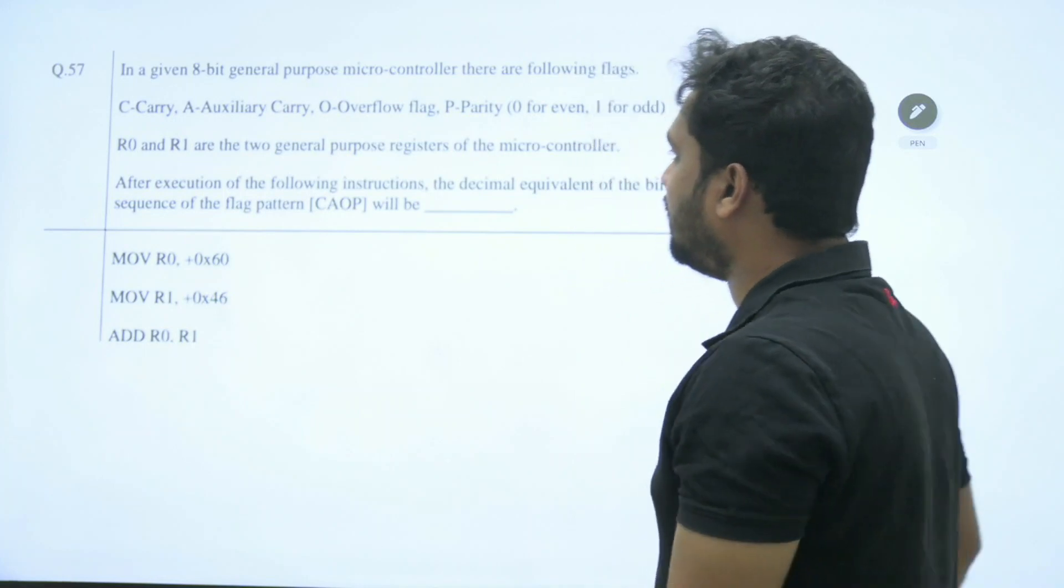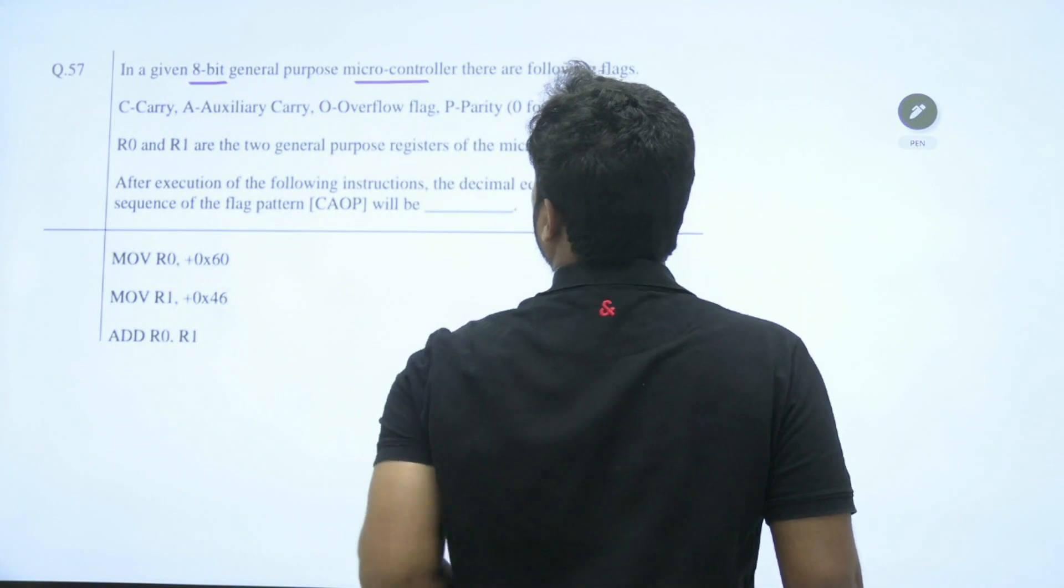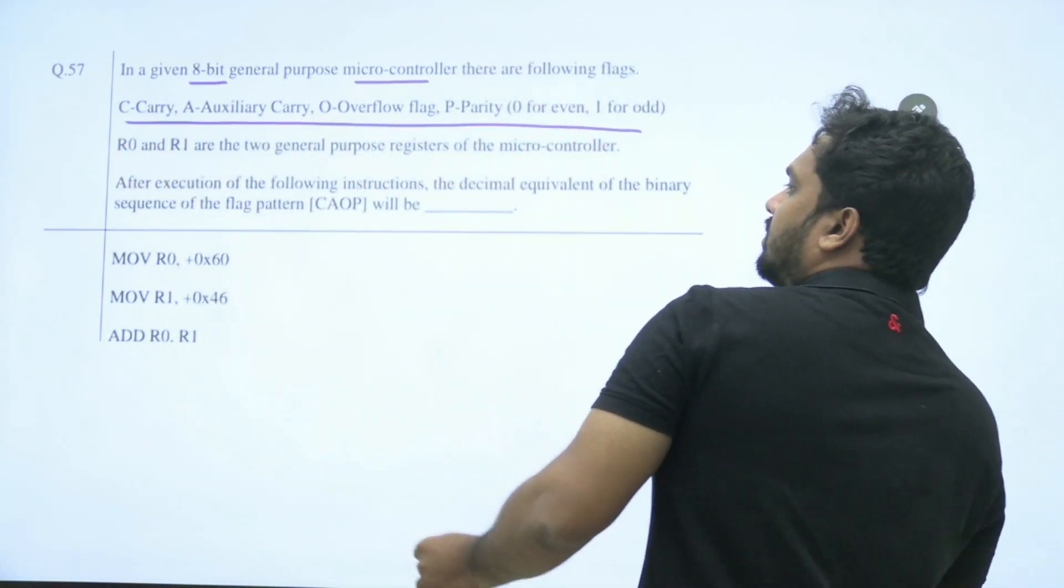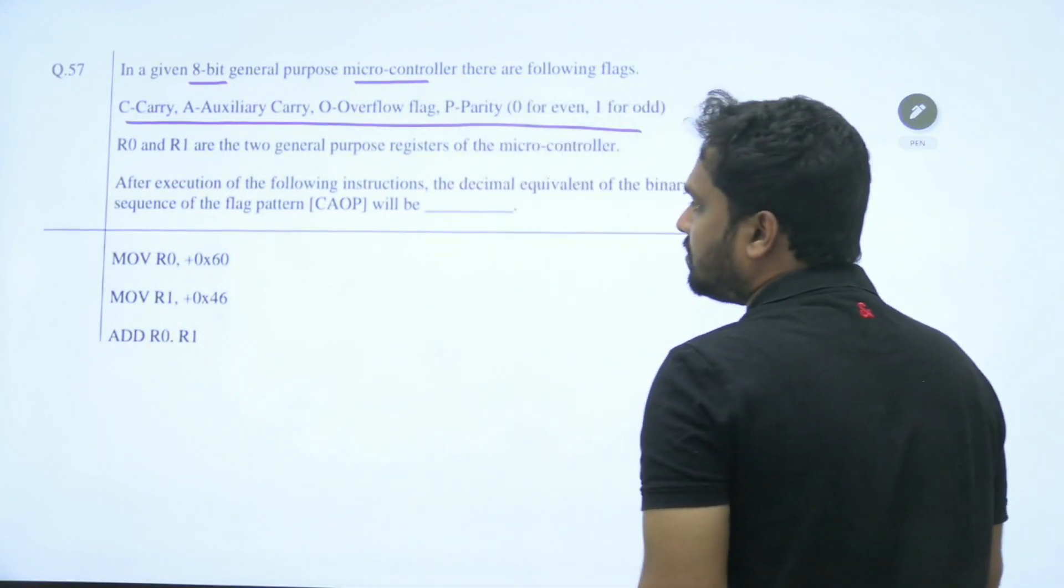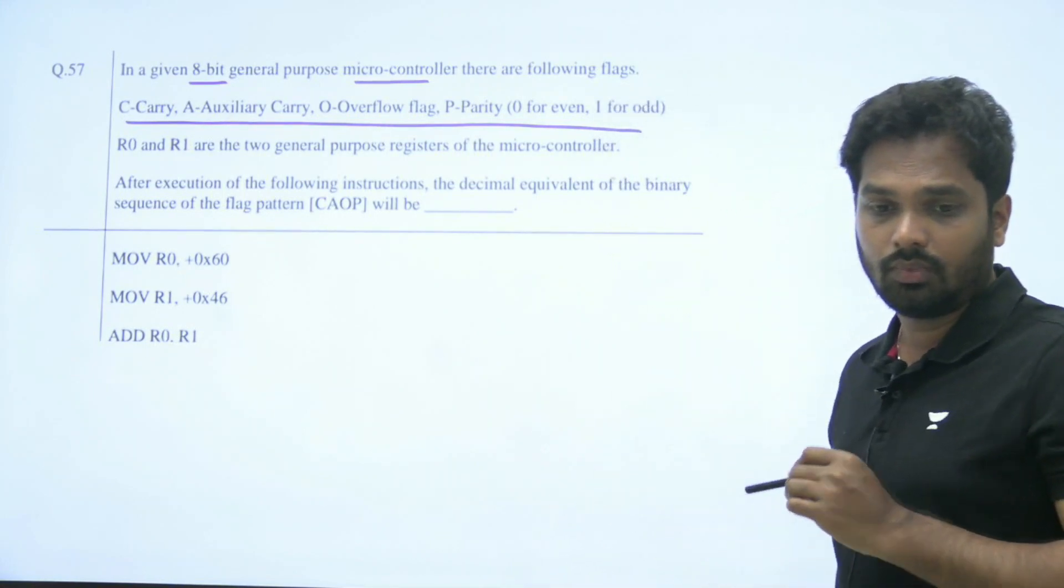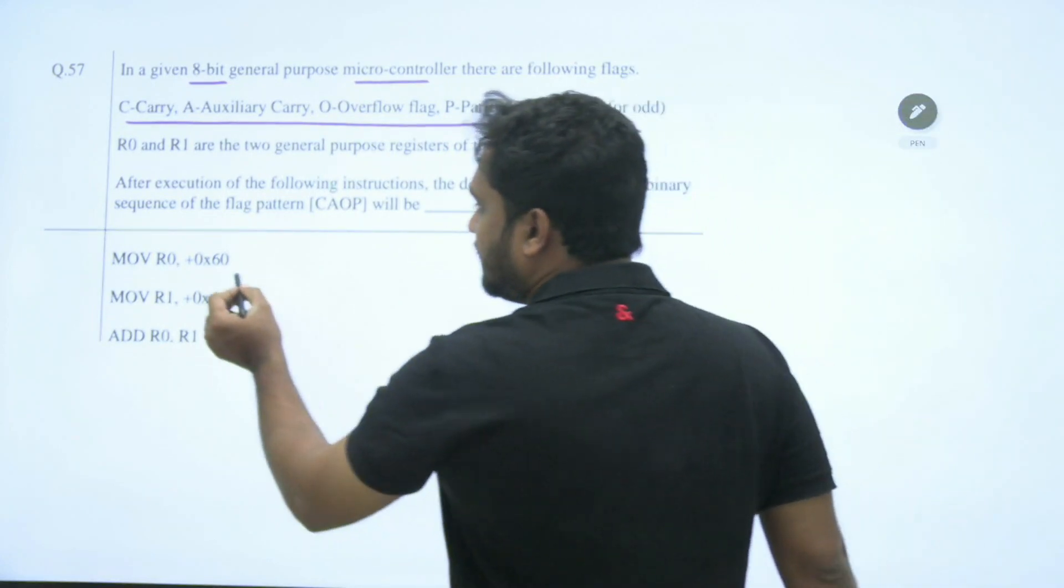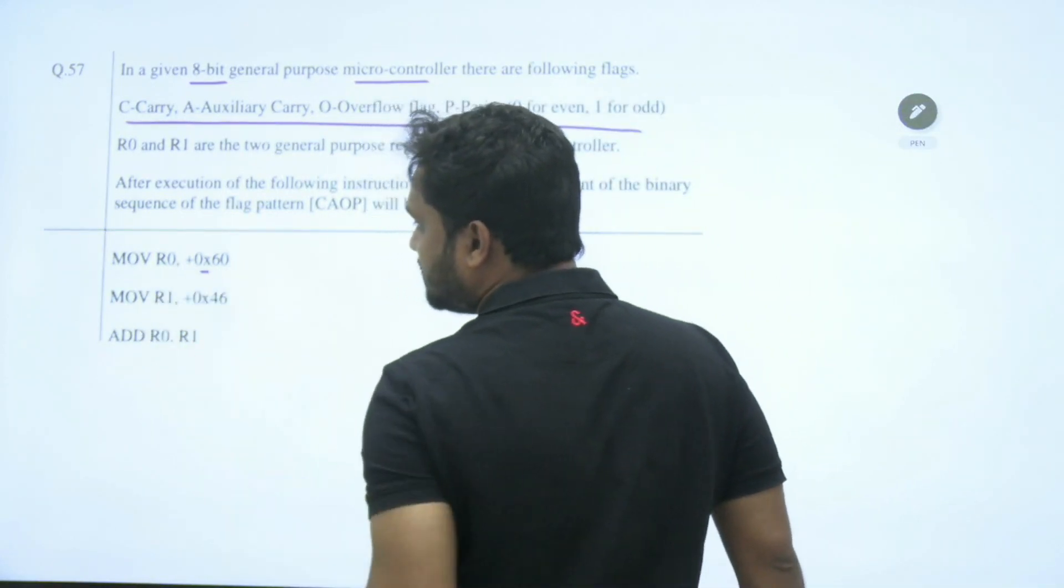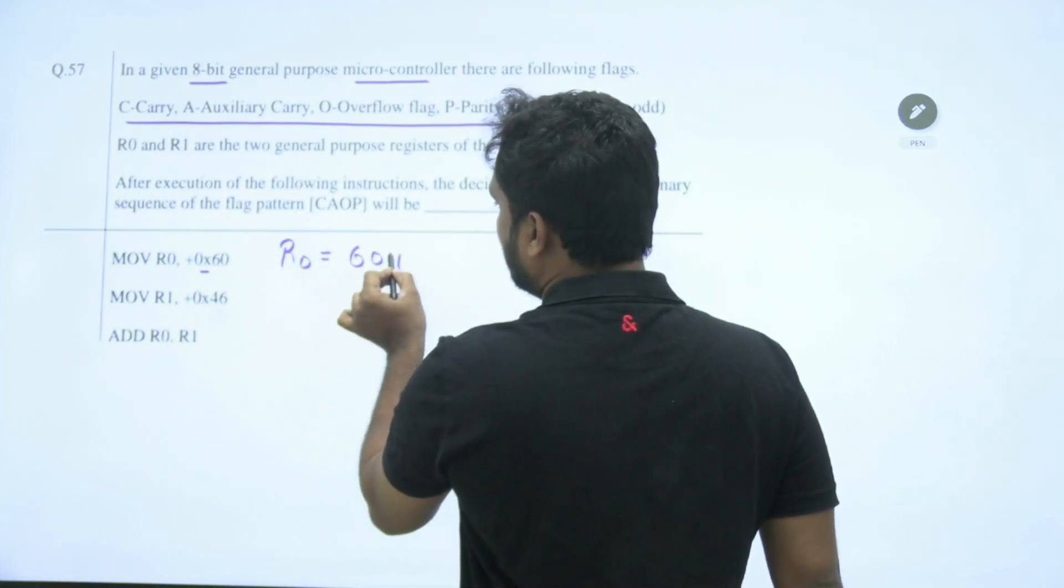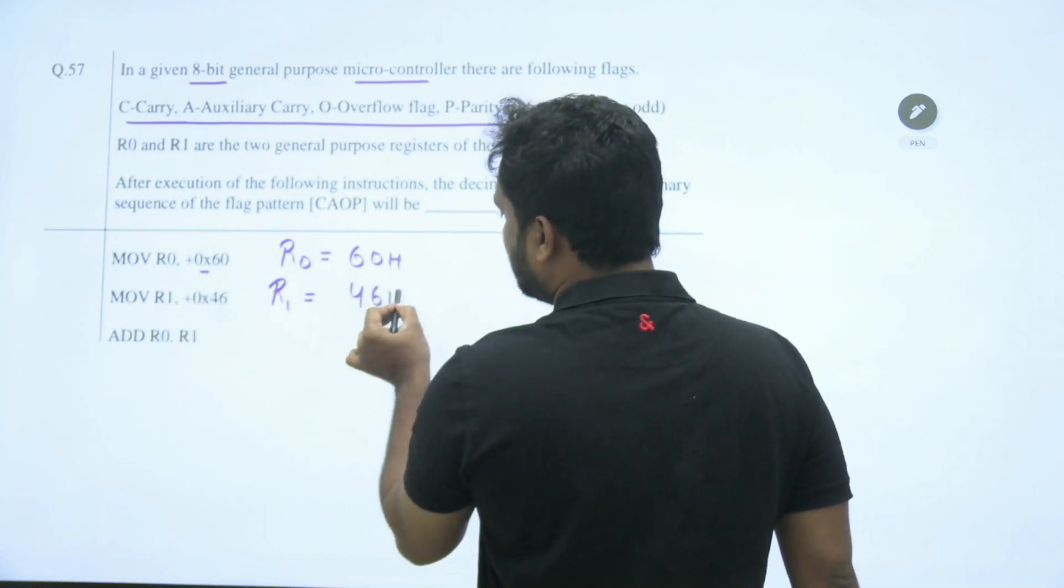So you have an 8-bit general purpose microcontroller with following flags: carry, auxiliary carry, overflow, parity, and R0, R1 are general purpose registers of the microcontroller. After the execution of the following instructions, hexadecimal R0 equals 60 hexadecimal, R1 MOV means it will be transferring the data 46 hexadecimal.